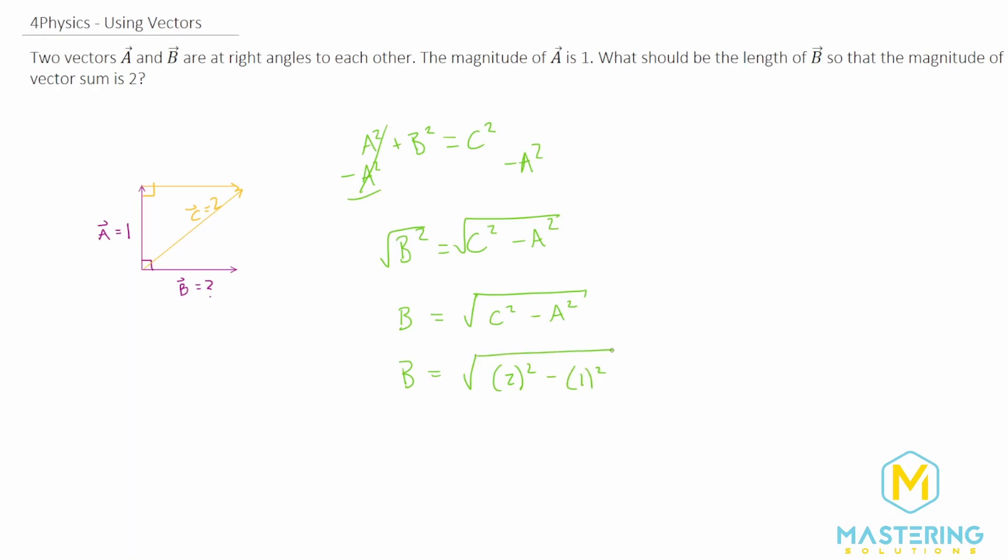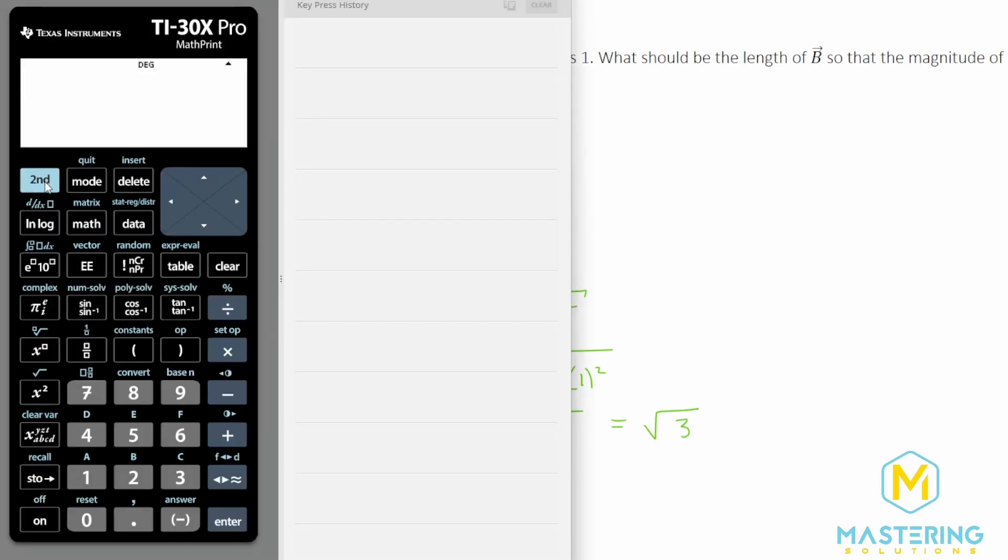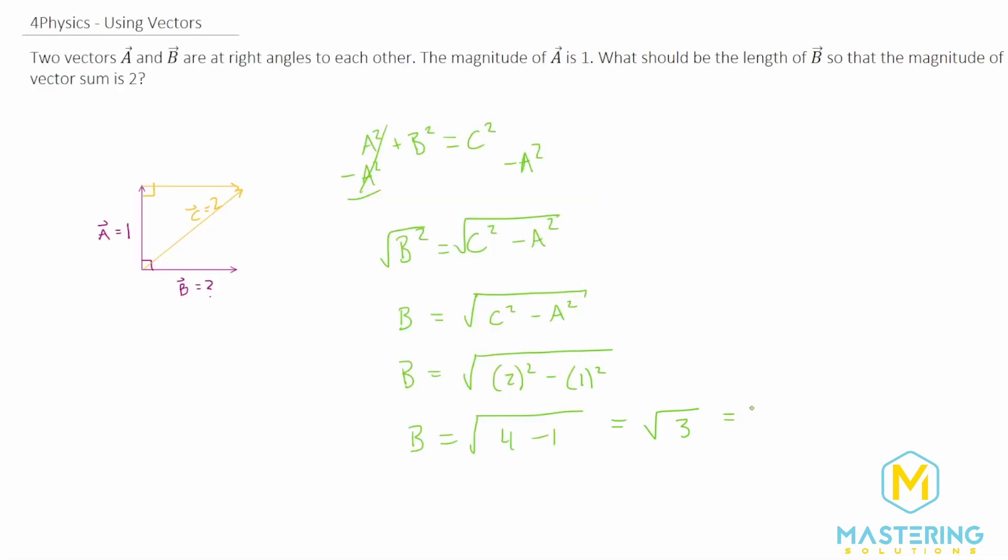And two squared is four. One squared is one. So b will be the square root of four minus one. So b is the square root of three. So the square root of three is 1.7. So b needs to be 1.7 units long in order so that when we add a and b together, c will equal 2.